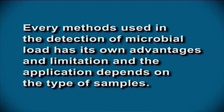To conclude on the second part of cultivation of microorganisms, there are a number of methods for enumeration of microorganisms. Every method used in the detection of microbial load has its own advantages and limitations, and the application depends on the type of samples. It is also very important to know the physical parameters required for cultivation and enumeration of microorganisms, as microbial growth depends on parameters like pH, temperature, aeration, etc. Thank you viewers.